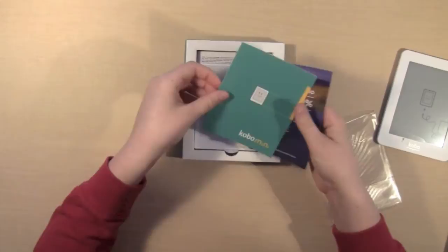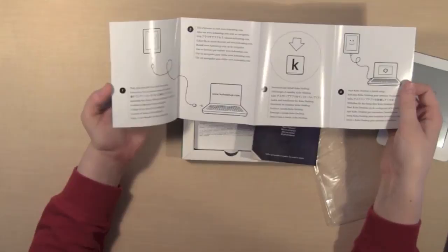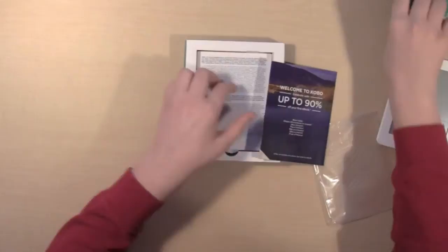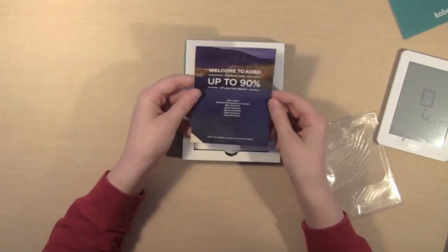There's a little quick start guide. It says that you have to go to Kobosetup.com, download Kobo desktop, and plug your Kobo in and start synchronizing it. And, welcome to Kobo. Celebrate with up to 90% on your first e-book.